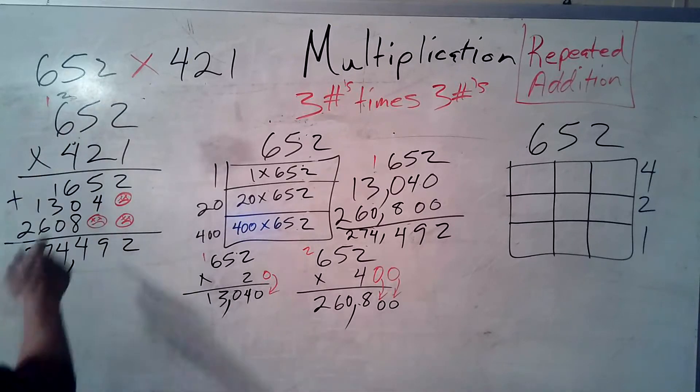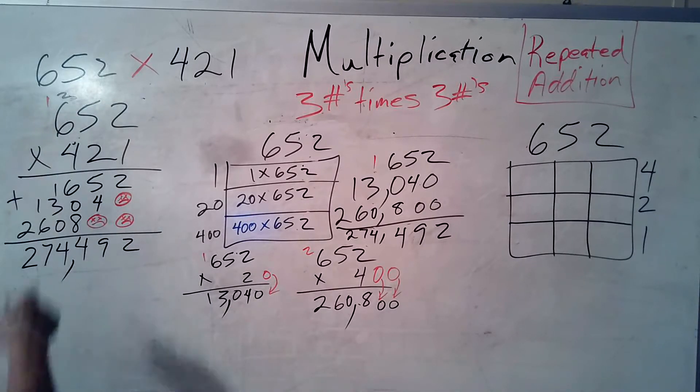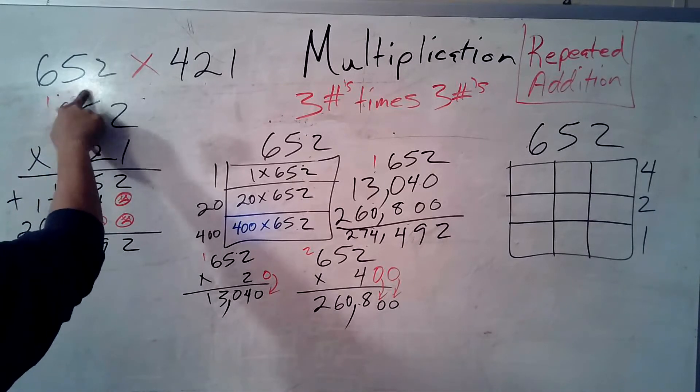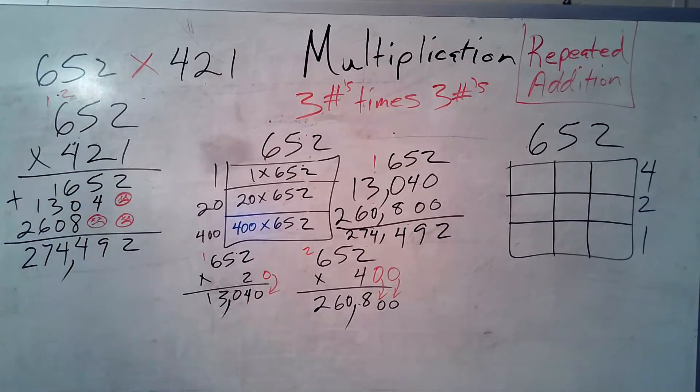4 times 2 is 8. 4 times 5 is 20. Write down the zero. Carry the 2. And then 4 times 6 is 24 plus 2 more is 26. Line them up. Add them up.